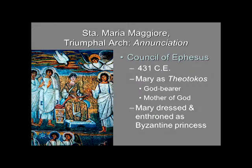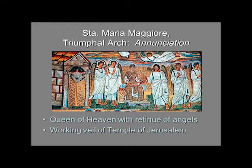So she has a retinue of angels who stand beside her. She's wearing a golden and richly decorated garment with a diadem, as though she were a Byzantine or early Christian Imperial Princess or Queen. Queens don't just go around without anybody around them, so she definitely has her retinue, who in this case happens to be angels.